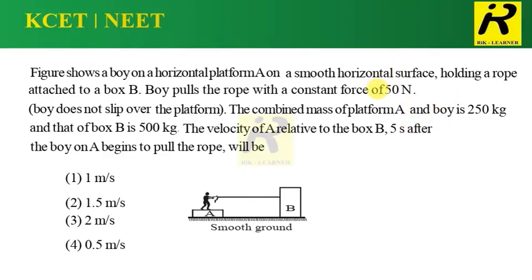Welcome to the channel RIK Learner for KCED NEET. The figure shows a boy on a horizontal platform A on a smooth horizontal surface, holding a rope attached to a box B. The boy pulls the rope with a constant force of 50 Newton. The boy does not slip over the platform. The combined mass of platform A and the boy is 250 kg, and that of box B is 500 kg. The question asks for the velocity of A relative to box B, 5 seconds after the boy begins to pull the rope.